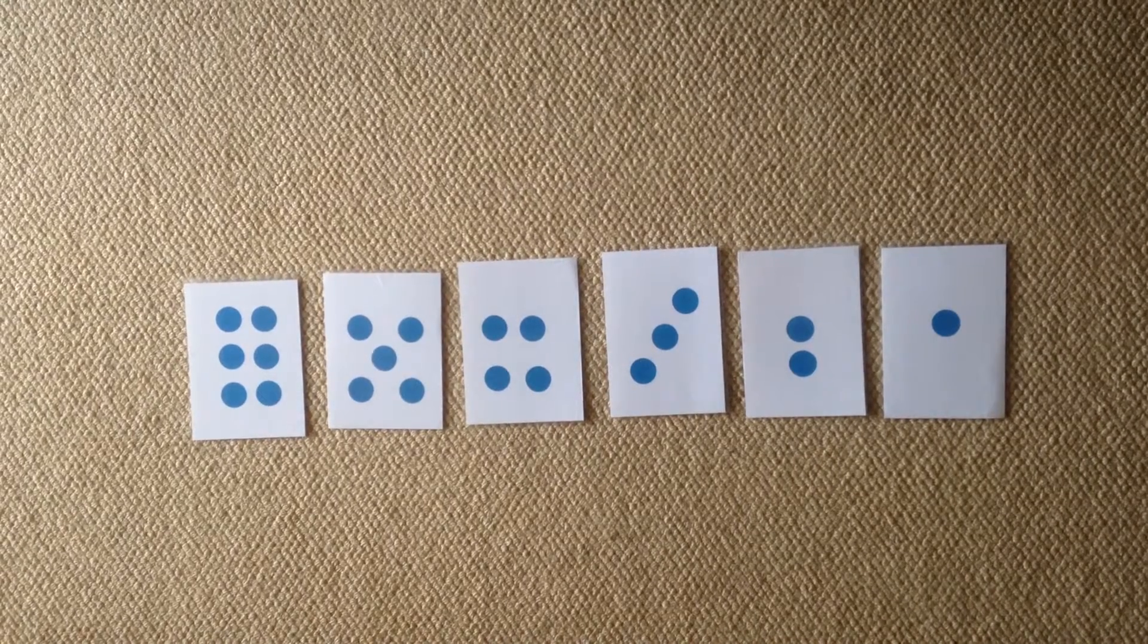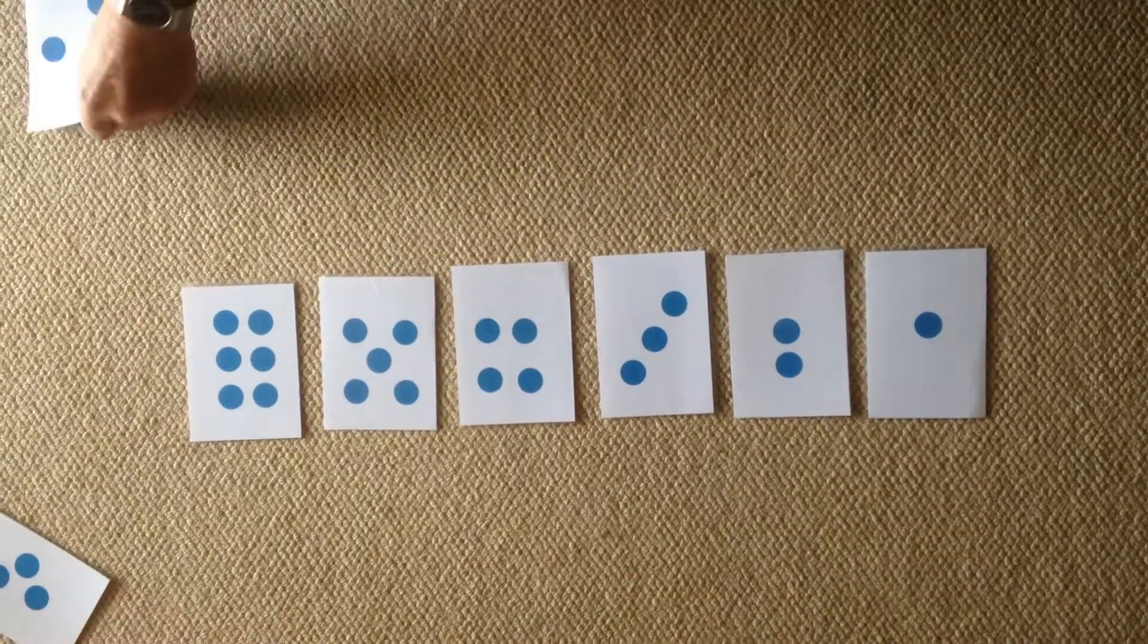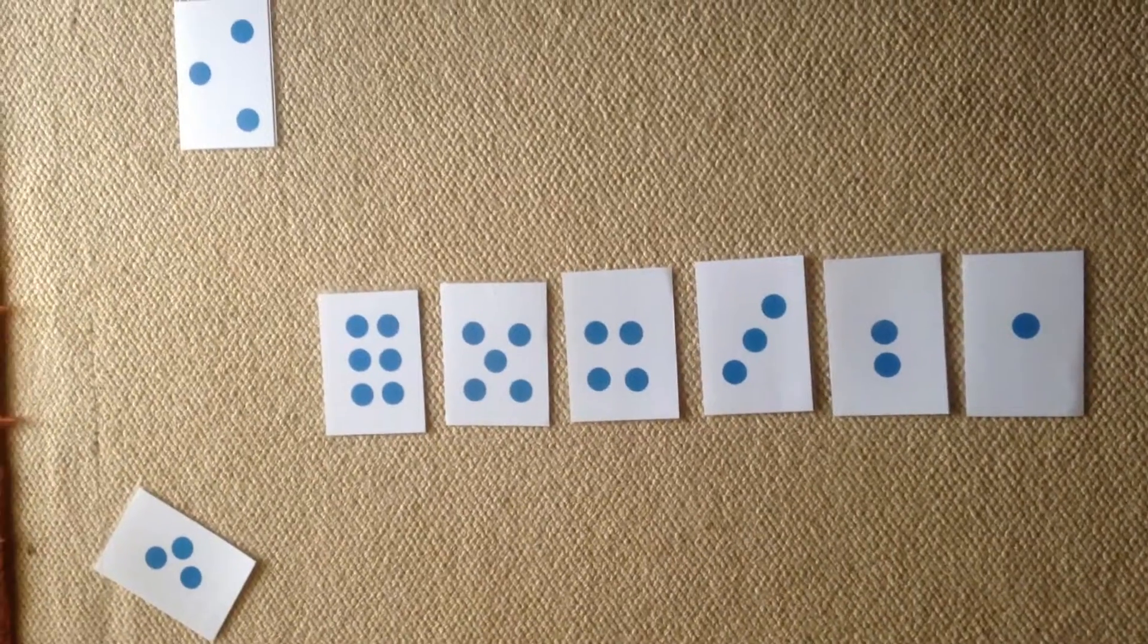throw away a card that's one less than four. I'm going to throw away this three. I've got this three, Anne. Okay, put that over there. Your turn to give an instruction.